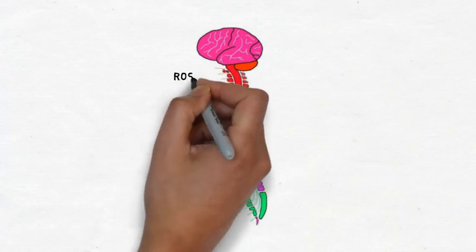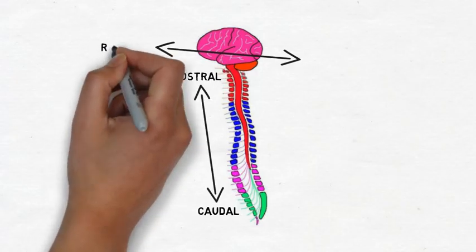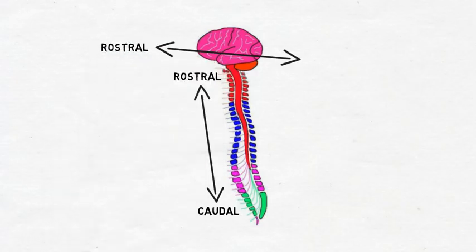At the level of the spinal cord, rostral points up towards the head, while caudal points down towards the end of the cord. In the brain, however, rostral points towards the anterior part of the brain, while caudal points towards the posterior part of the brain.